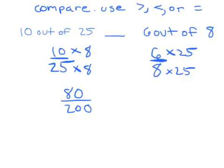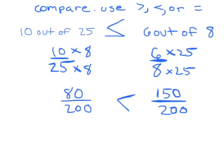6 times 25 is 150, and that's over 200 as well. So we know that 80 two-hundredths is less than 150 two-hundredths. So 10 out of 25 is less than 6 out of 8. That's one approach where we are using fractions and comparing them with that common denominator.